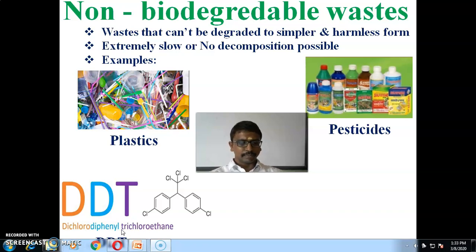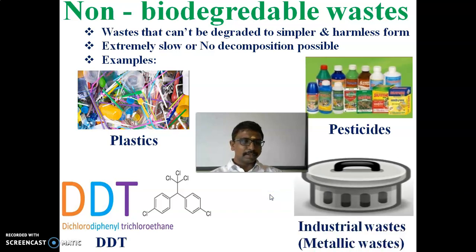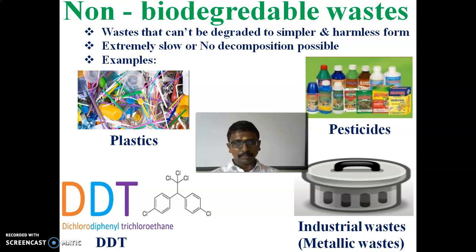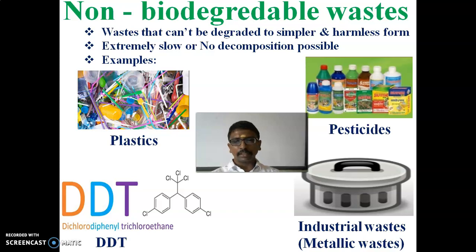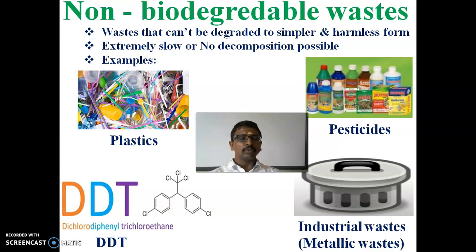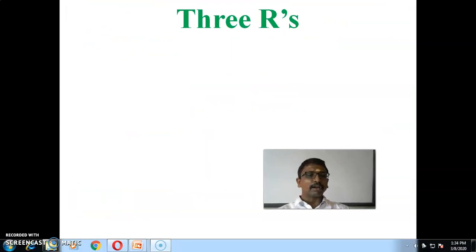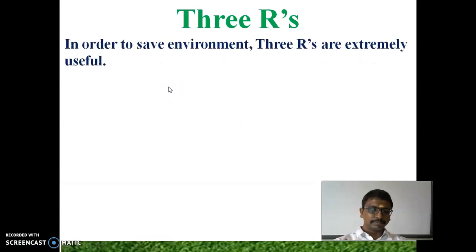One more example of non-biodegradable waste is industrial waste, that is metallic wastes. To summarize: non-biodegradable waste means waste that cannot be degraded to simpler and harmless form, it is hazardous to the environment, and decomposition is not possible. The examples are plastics, pesticides, DDT (dichlorodiphenyl trichloroethane), and industrial wastes especially metallic wastes.